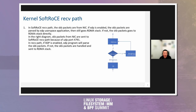For the SoftRoCE receive path parser: SKB packets arrive from the NIC. If XDP is enabled, the SKB packets are parsed by the XDP program user space application, then passed to the RDMA stack. If not, the SKB packets go to the RDMA stack directly. In the right diagram, SKB packets from the NIC are sent to the SoftRoCE receive parser. Because of UDP port 4791, the receive parser checks if XDP is enabled; if so, the XDP program parses the SKB packets. If not, the SKB packets are handled and sent directly to the RDMA stack.